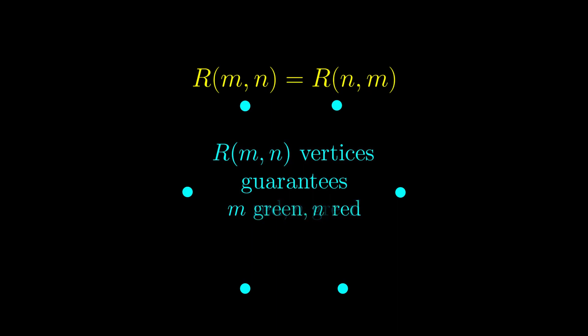But if I swap red edges to be green, and green edges to be red, then we can also guarantee m vertices linking with green edges, and n vertices with red edges. So this number of vertices is also r(n,m) as well.